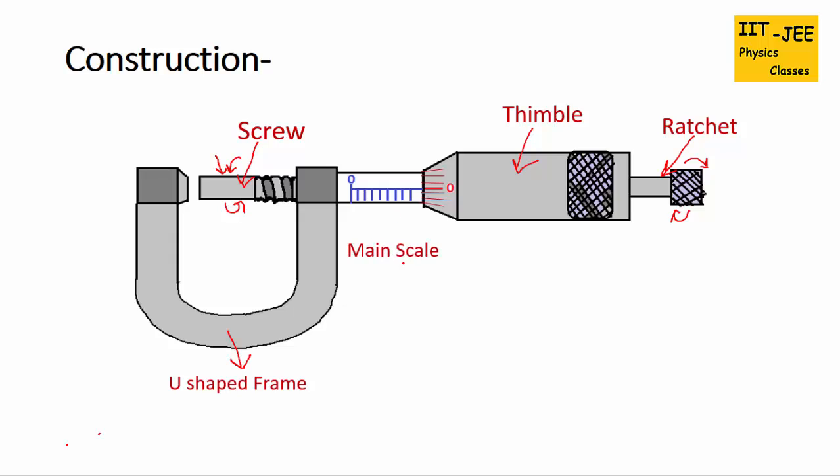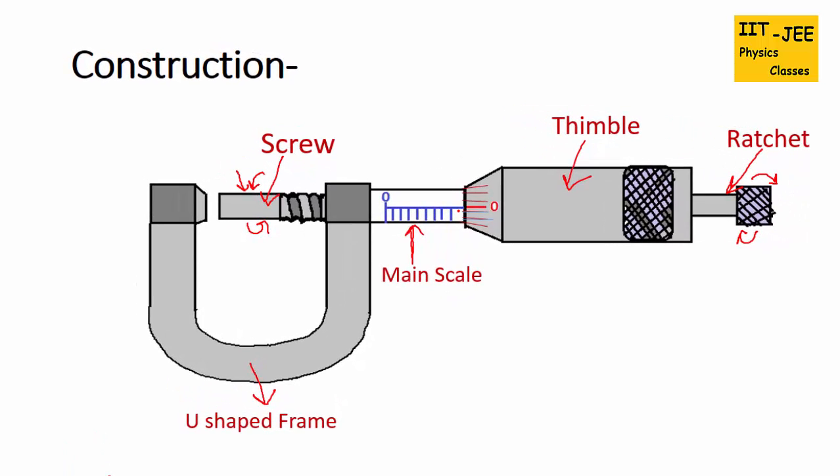There are two scales. First scale is this horizontal scale, it is called as main scale. It is marked in millimeters like 1 division equals 1 millimeter. From here to here it is 1 millimeter. So it is 0 then 1 millimeter, 2 millimeters, 3 millimeters, 4 millimeters and so on.